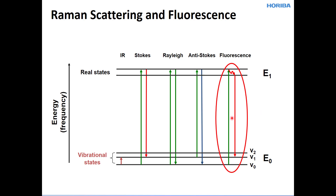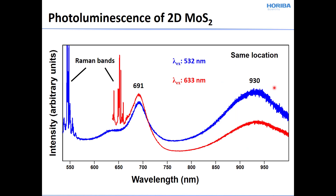Raman scattering and fluorescence can both appear in the same spectrum generated from the same experiment, because you're exciting with a wavelength where different processes can occur if you are in resonance with an electronic transition. Here's an example of spectra consisting of both Raman bands and photoluminescence, obtained from exfoliated few-layer two-dimensional molybdenum disulfide. These spectra were acquired from the same location on the flake, excited with different excitation wavelengths, and are plotted on a wavelength scale — not Raman shift.